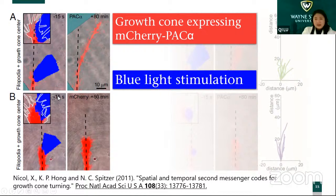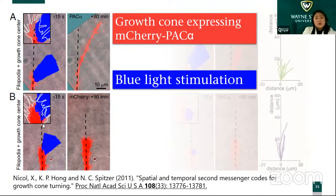After shining blue light on just one side instead of directly in the center, after about one hour and twenty minutes the growth cone grows in that direction. But if you shine the light across the center line — on top of the growth cone — the growth cone stays in its previous direction.